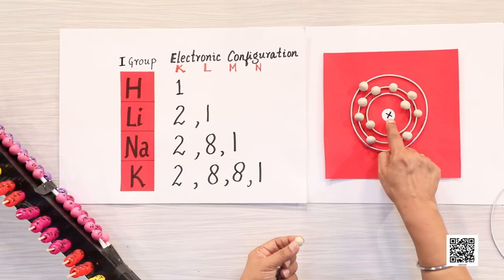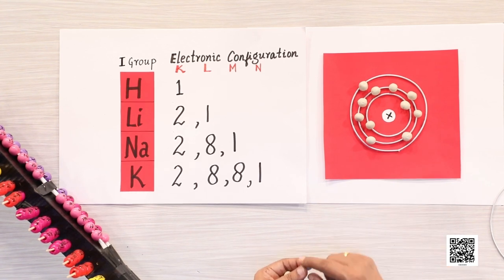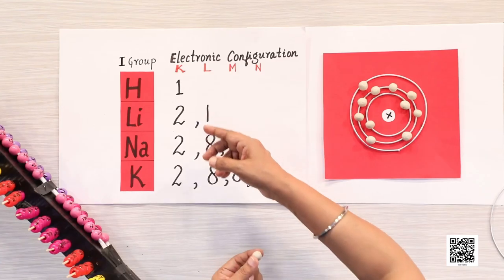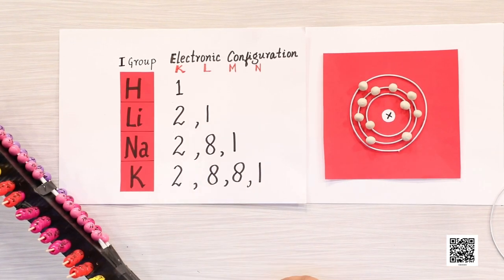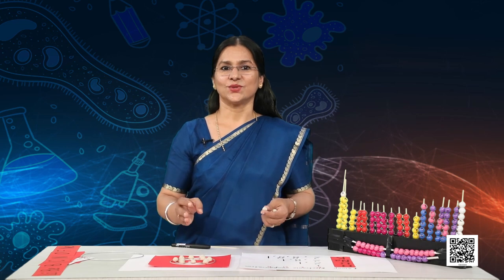The atomic size increases down the group because a new shell is being added as we go down, increasing the distance between the outermost electrons and the nucleus. So the atomic size increases in spite of the increase in nuclear charge. Now, how does valency vary in a period going from left to right? Let's develop the electronic structure of second period elements.